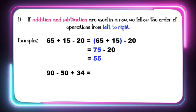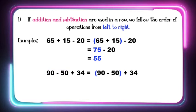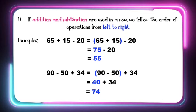How about 90 minus 50 plus 34? As you can see from the left, we have the subtraction first, so we are going to subtract first. 90 minus 50 is equal to 40. Then we are going to add 40 and 34. 40 plus 34 is equal to 74. So 90 minus 50 plus 34 is equal to 74.